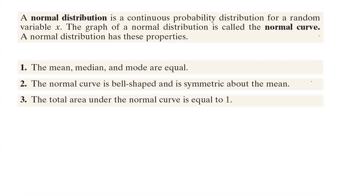The total area below the normal curve is one, or one hundred percent.